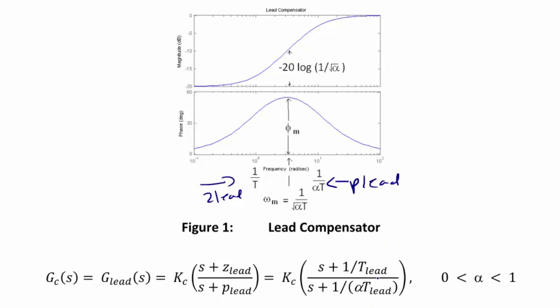Where t_lead is some constant that we have selected based upon where we want the phase angle to be. And α is between 0 and 1. So for a phase lead compensator, remember p_lead is always greater than z_lead.